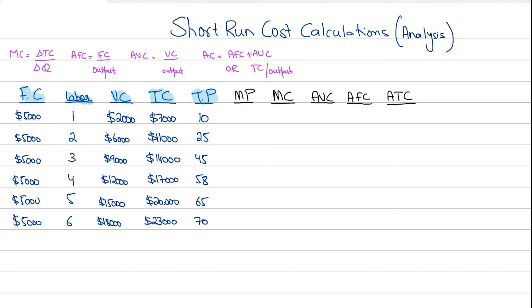I want you to pause this video and fill in these columns. You need to calculate the marginal product — since total product is given — and also the marginal cost, average variable cost, average fixed cost, and average total cost.